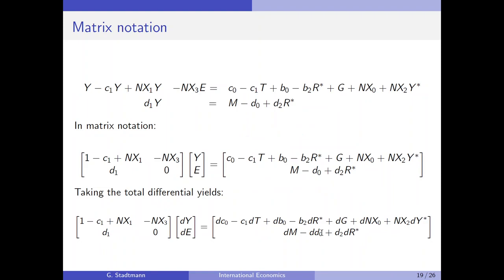Now we are ready to write this relationship in matrix notation, collecting all coefficients in the coefficient matrix: (1 − C1 + NX1) and minus NX3 in the first row, and D1 in the second row. The second equation does not depend on the exchange rate, so there is a 0 multiplying the exchange rate in that row.